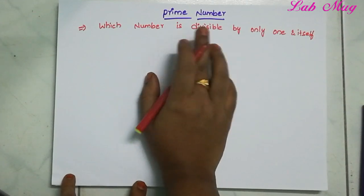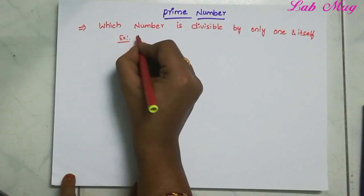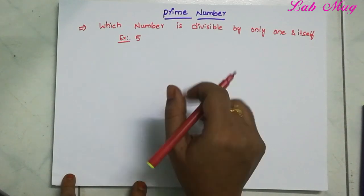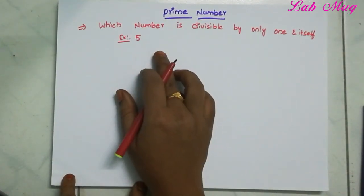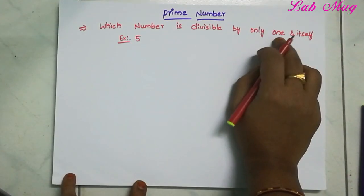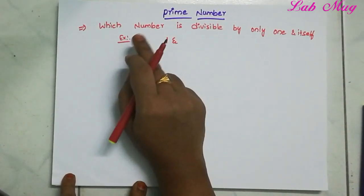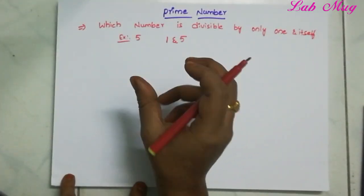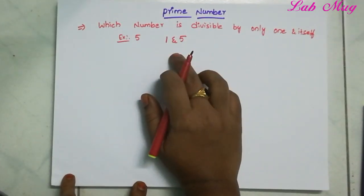For example, we have a number 5. We need to calculate the factors of 5. Our aim is to check divisibility by 1 and itself. 5 divided by 1 gives remainder 0, so 1 is a factor.